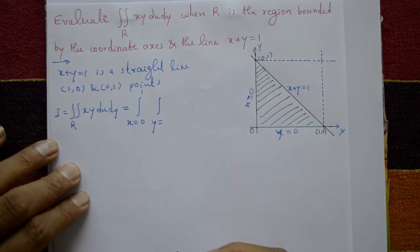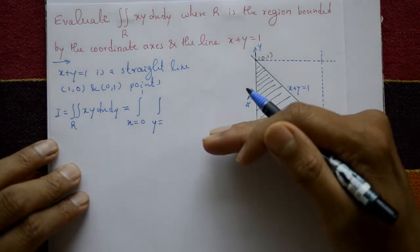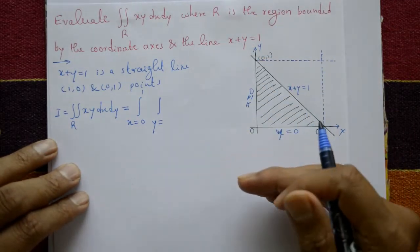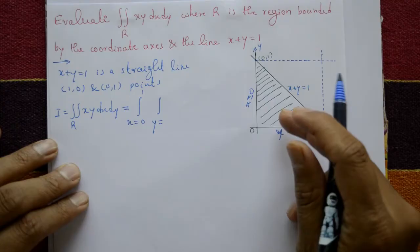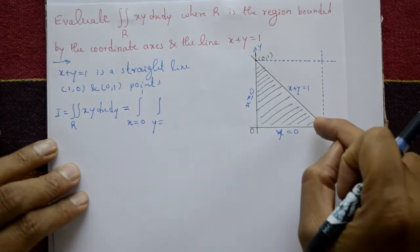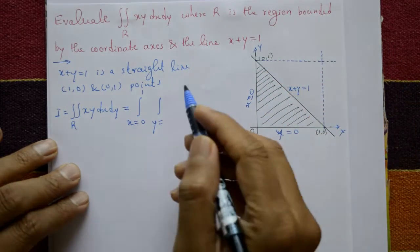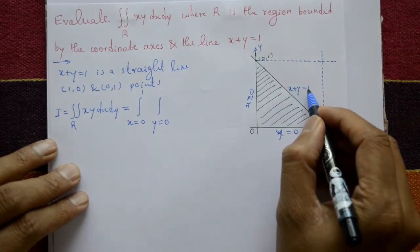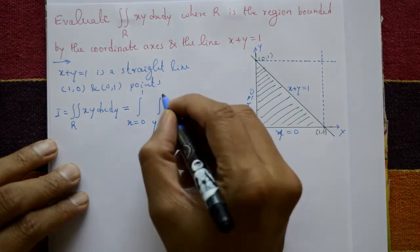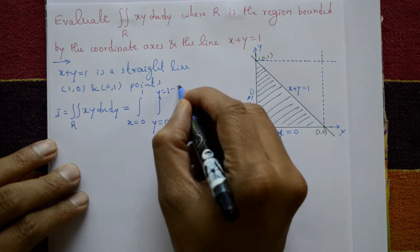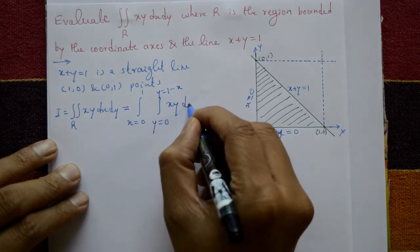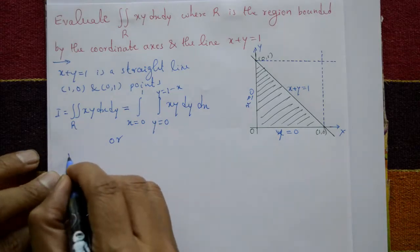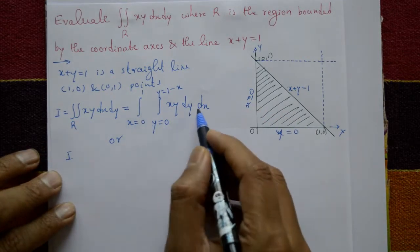For y, take it from bottom to top within the shaded area. y goes from 0 (lower curve) to the upper curve. The upper curve is x plus y equal to 1, so y equal to 1 minus x. Therefore the integral is: integration x from 0 to 1, y from 0 to 1 minus x, of xy dy dx.